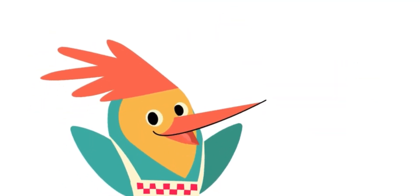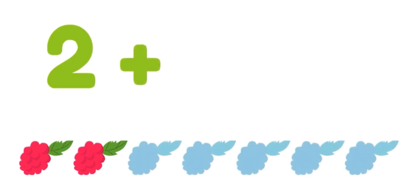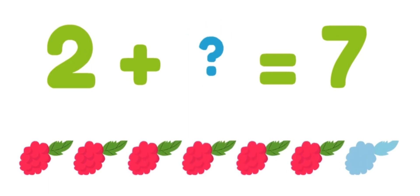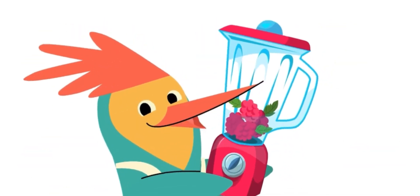Let's do some addition. I have two berries, but I want seven. How many more do I need to get to seven? Let's count. One, two, three, four, five! Two plus five equals seven berries! Mmm! Time to make a smoothie!